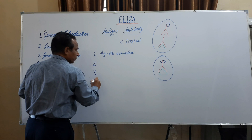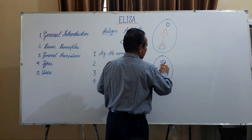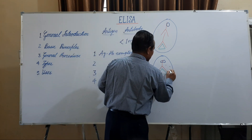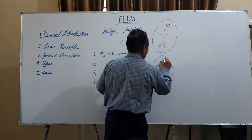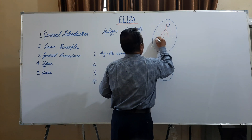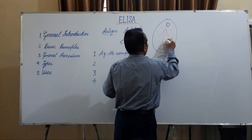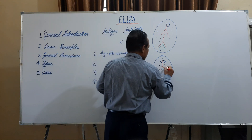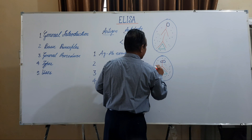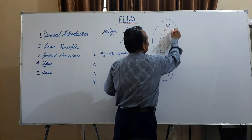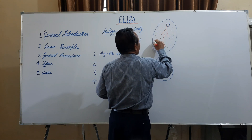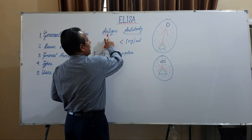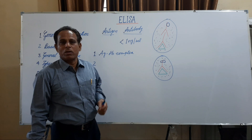Fourth, when the substrate of the enzyme with appropriate reagent is added in the medium, the reagent is oxidized to produce a specific colour in the medium. The appearance of the colour and the intensity of the colour denote the presence of a particular antigen and antibody in the biological sample.